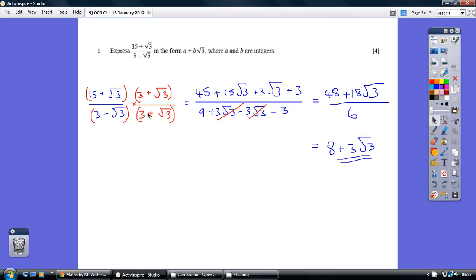So, 3 plus root 3 and 3 plus root 3. Just a pair of brackets to multiply out.